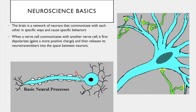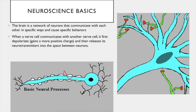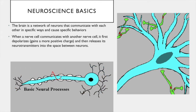When a nerve cell communicates with another nerve cell, it first depolarizes — in other words, gains a more positive charge — and releases its neurotransmitter into the space between neurons. You can see this illustrated in the images here. When neurons receive neurotransmitter from another cell, the signal travels down the dendrites and the cell body and down the axon, where it causes the release of neurotransmitter.